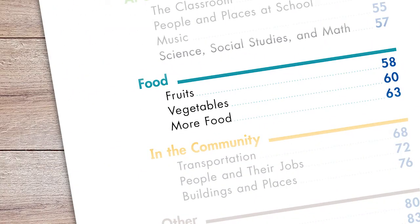Take the classic I Spy game for example. Through the clues you give, you can guide your students through the dictionary to find a mystery picture. Start with a general clue like 'I spy a piece of food' to get them using the table of contents to find the right category pages.